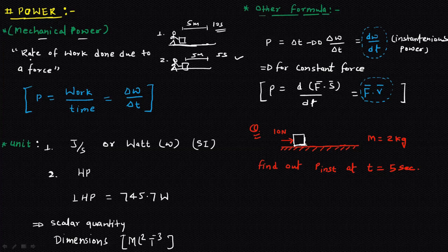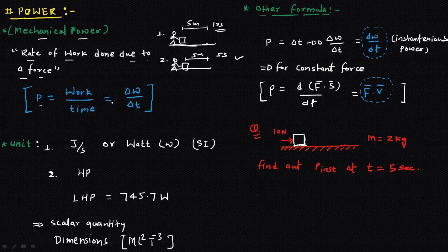Power is defined as the rate of work done due to a force. The rate of work for person one is lesser compared to person two. So we can define the formula for power: Power equals work divided by time, represented as P = ΔW / ΔT.